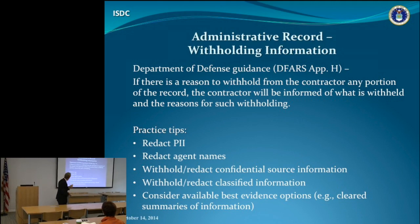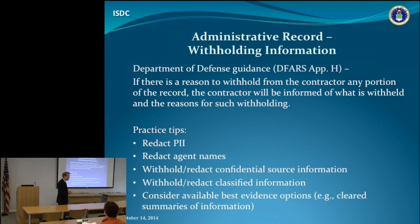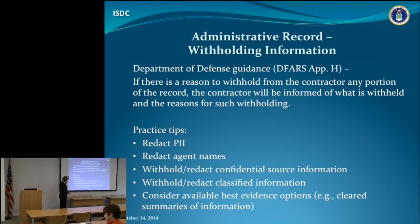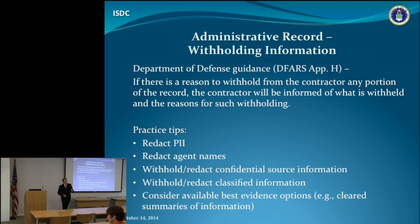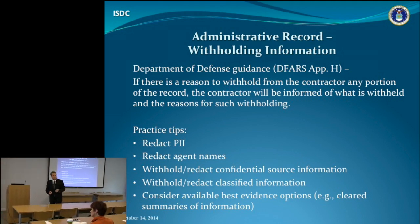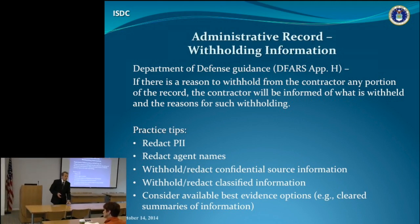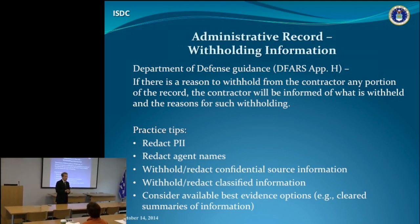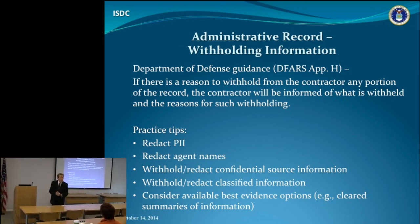The first thing to do is make sure you have authority within your agency that allows you to withhold information. In the Department of Defense, we have Defense Federal Acquisition Regulation Supplement Appendix H, which says that if there is a reason to withhold information from the contractor — any portion of the record — I can do it, but I have to inform the contractor what was withheld and my reason for doing so. You need to make sure your agency has this type of authority. If you don't, it can get real ugly real quick.